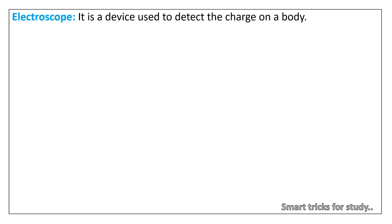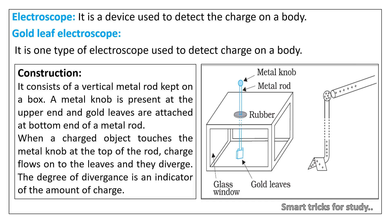Next, a brief explanation about electroscope for extra knowledge. Electroscope: It is a device used to detect the charge on a body. Gold leaf electroscope: It is one type of electroscope used to detect charge on a body. Construction: It consists of a vertical metal rod kept on a box. A metal knob is present at the upper end and gold leaves are attached at bottom end of a metal rod. When a charged object touches the metal knob at the top of the rod, charge flows onto the leaves and they diverge. The degree of divergence is an indicator of the amount of charge.